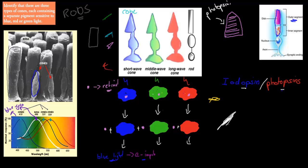But the reason why I mention all this is because the dot point says identify, which means name or recognize, identify that there are three types of cones, each containing a separate pigment sensitive to blue, red, or green light. So you should know that there's three different types of pigments. They're all photopsins, that's the overall category. You can call them iodopsins or photopsins. That's the overall name for them, but they're slightly different because each of them can pick up a slightly different type of wavelength. Blue wavelength, green wavelength, and red wavelength.